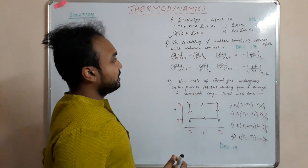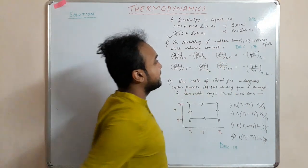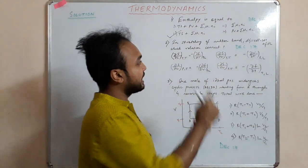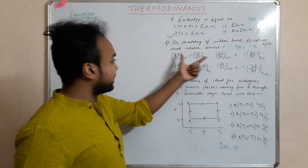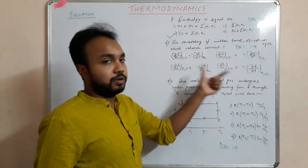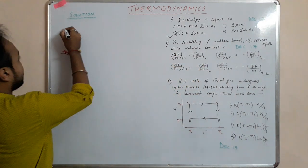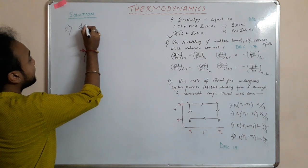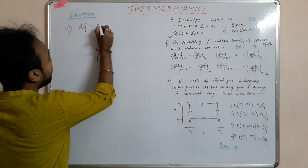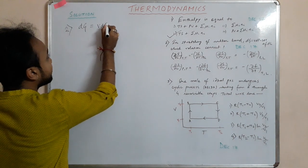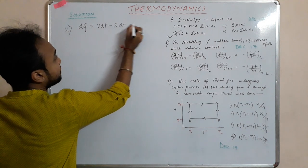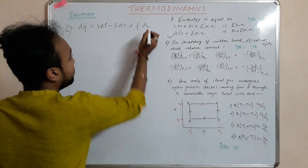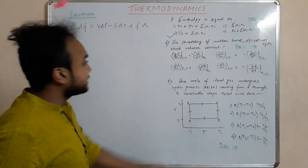The second problem says that in the stretching of a rubber band, the relation is given as dG = VdP − SdT + FdL. We have to identify which among four given relations is correct. Let's start with this given relation dG = VdP − SdT + FdL.